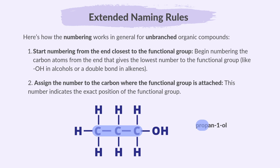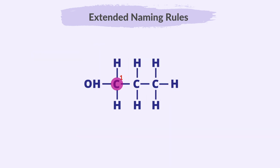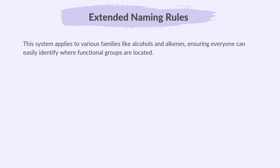Since this compound has three carbon atoms, we know it starts with 'prop'. Because it has an OH group, the name will end with 'ol'. The carbon attached to the OH group is carbon number one, so the name of this compound is propan-1-ol. This structural formula shows exactly where the OH group is attached. This system applies to various families like alcohols and alkenes, ensuring everyone can easily identify where functional groups are located.